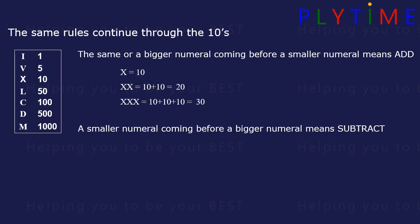XL is 10 before the 50, which is 50 minus 10, equals 40. L on its own is 50. LX is 50 plus 10, which is 60. LXX is 70 and LXXX is 80. Moving on, 90 is 100 minus 10, so it's XC, and C alone is 100.